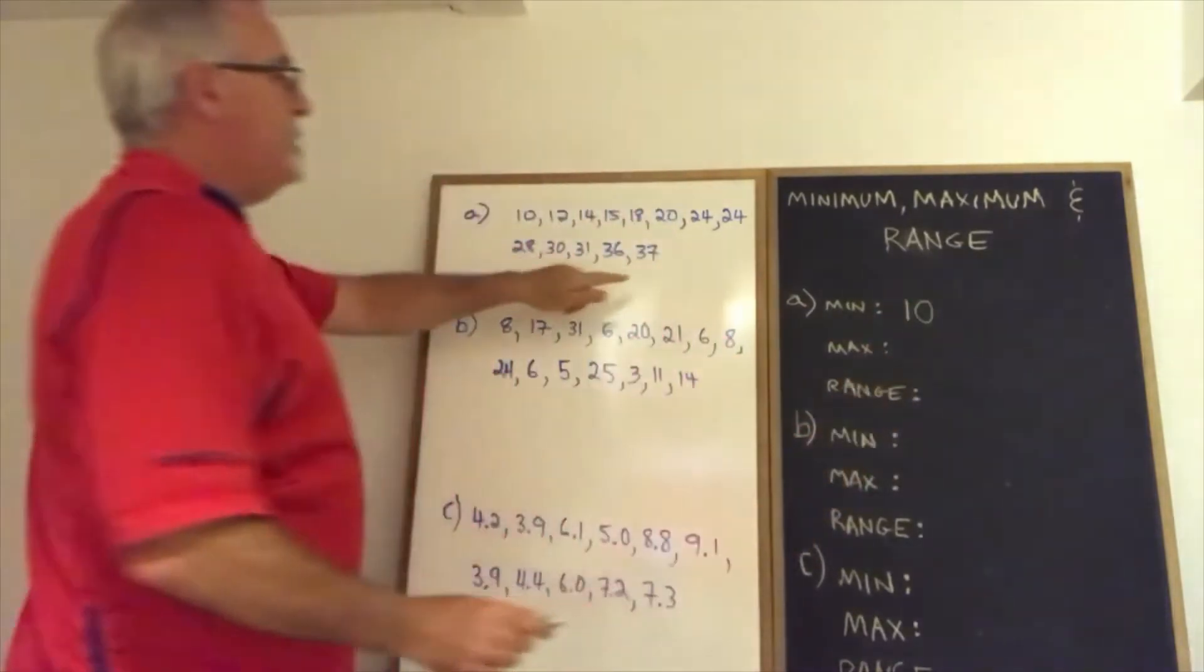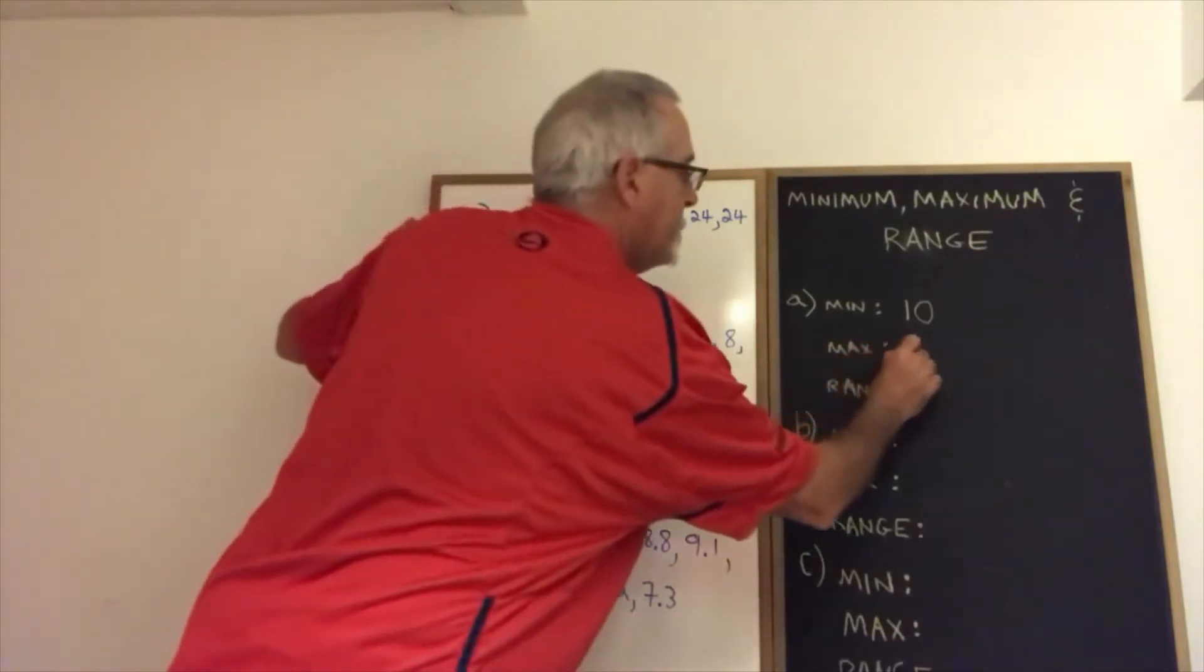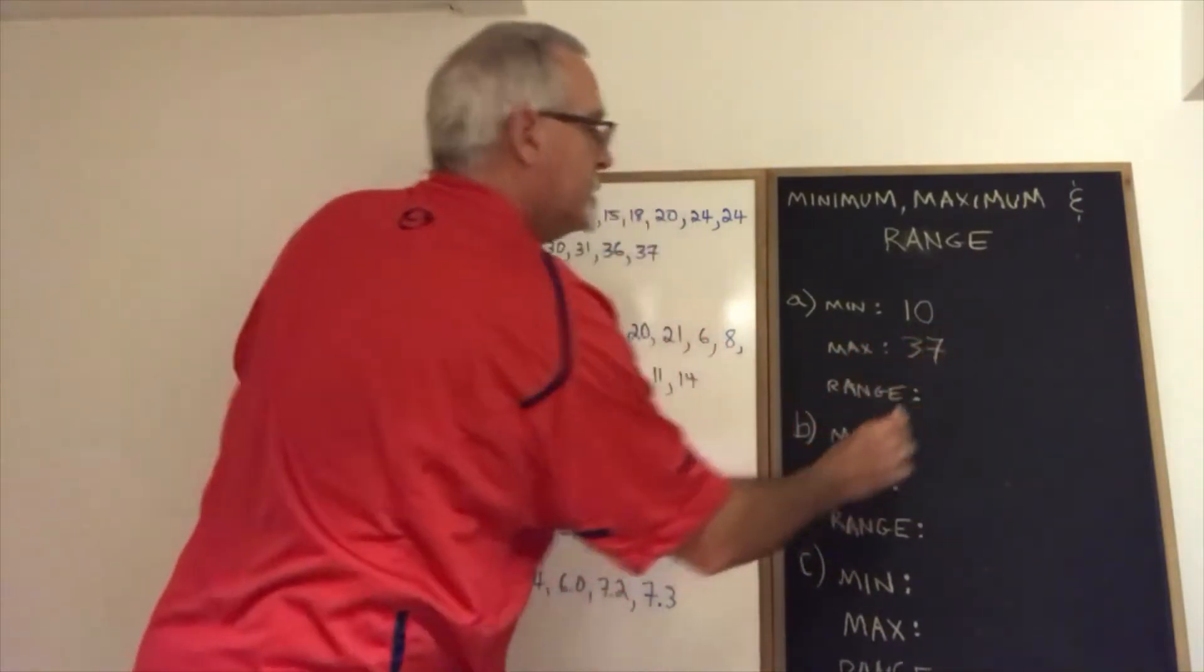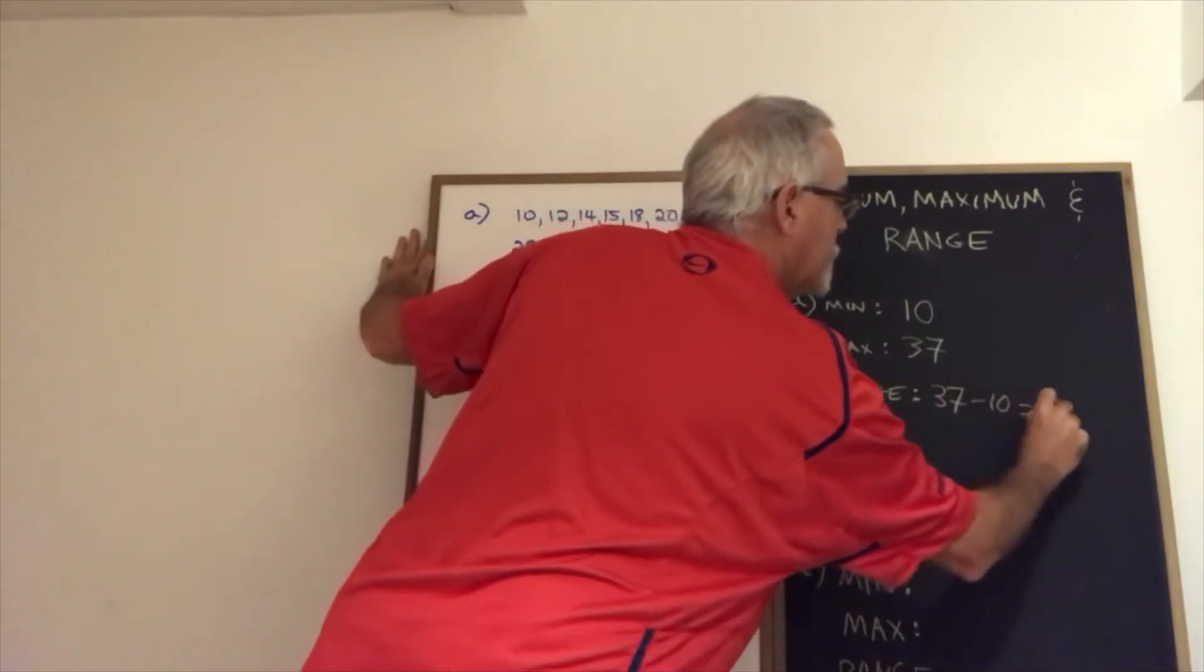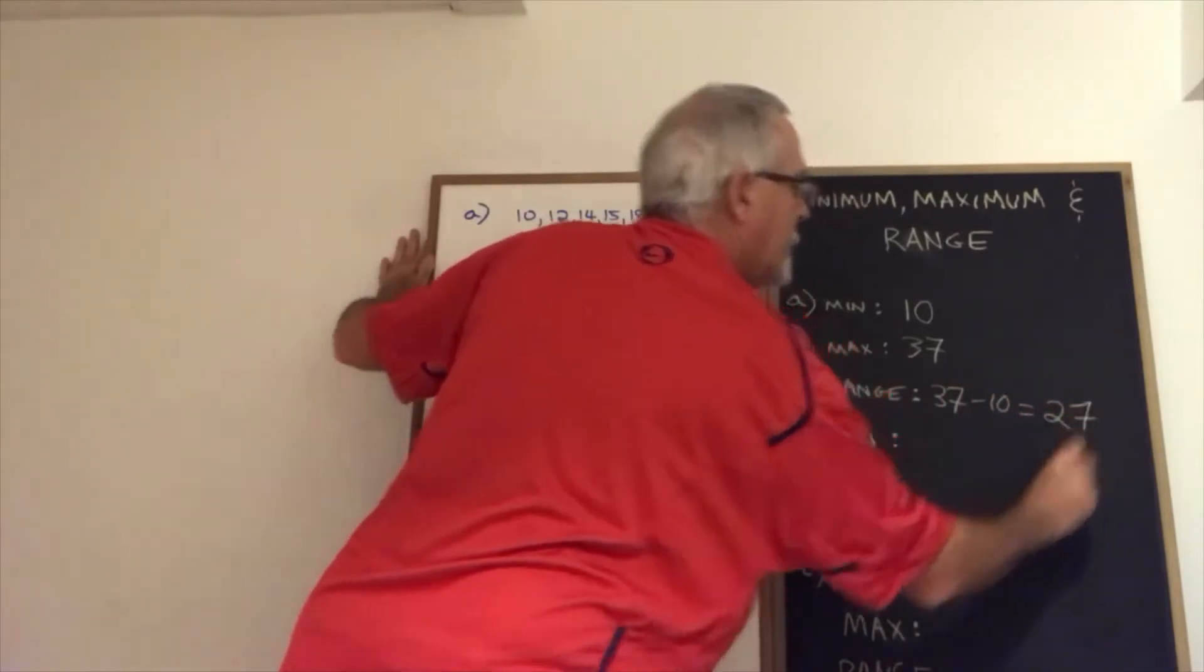The minimum is 10, the maximum is 37. The range is therefore 37 minus 10, which is 27. We've answered the question.